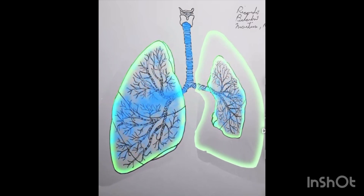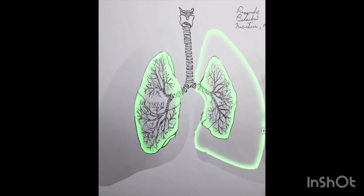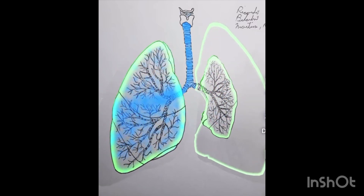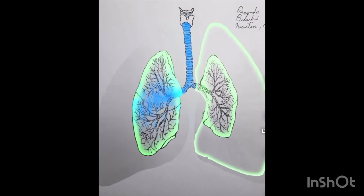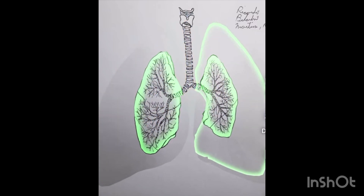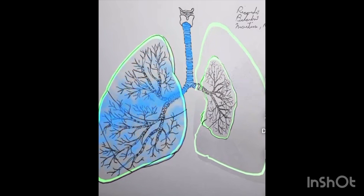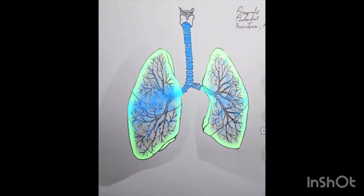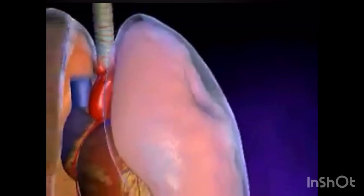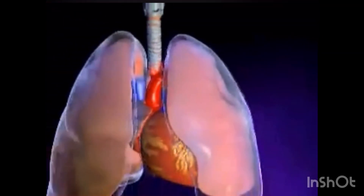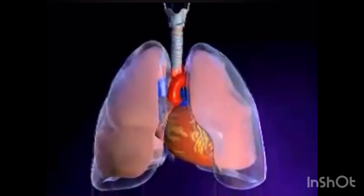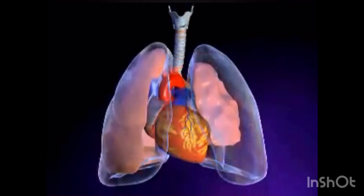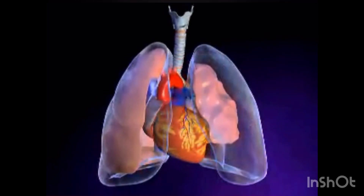With no exit, this can lead to ipsilateral lung collapse with a mediastinal shift toward the contralateral side. When left untreated, it can impede venous return, reduce cardiac output, and compromise normal cardiovascular status and haemodynamic stability.